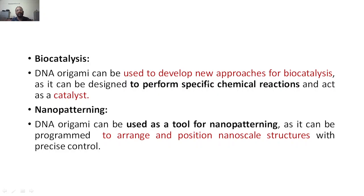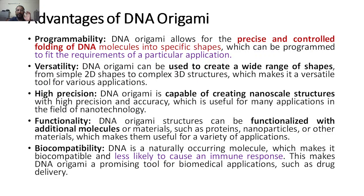Next, biocatalysis — it will involve developing new approaches for biocatalysis to perform specific chemical reactions. Enzymes and catalysts can facilitate reactions; similarly, DNA Origami can be used as biocatalysis. Next, nano patterning — to create, pattern, or fabricate nanostructures exactly as required. For example, nanochips for electronic gadgets like supercomputers and quantum computers. DNA Origami can be used as a tool for nano patterning — it can be programmed to arrange and position nanoscale structures with precise control, in whatever size and shape you want.